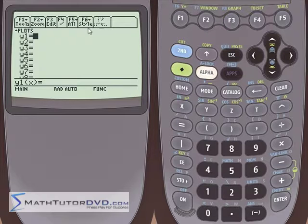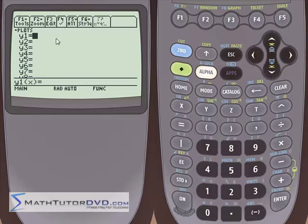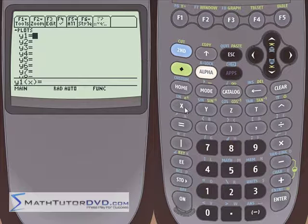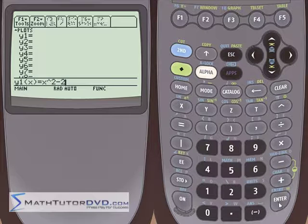So we'll go into the y equals menu and put in two graphs of interest that we want to figure out where they intersect. So we'll go ahead and put y squared minus 2. It could be anything, though.